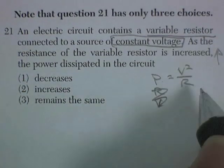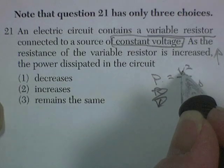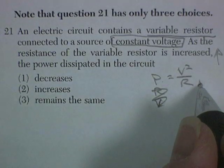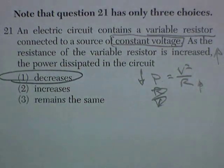Power is equal to V squared over R. So the resistance is going to go up, while the voltage stays the same. But if the resistance increases, the power has got to decrease. Choice one.